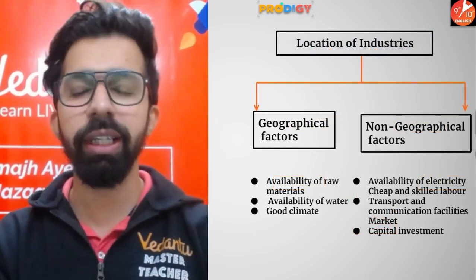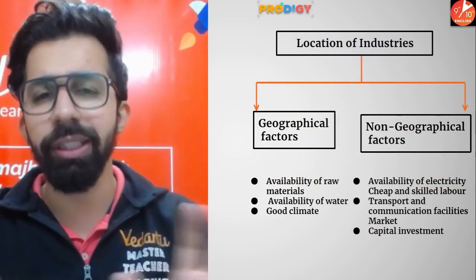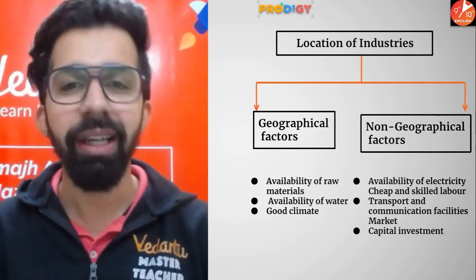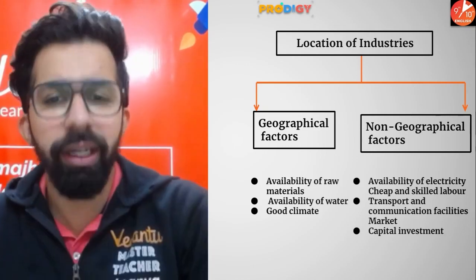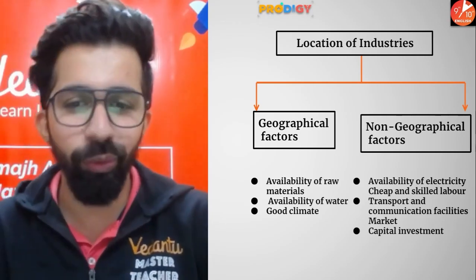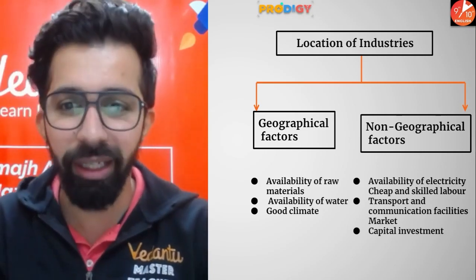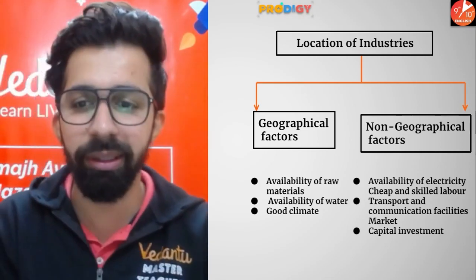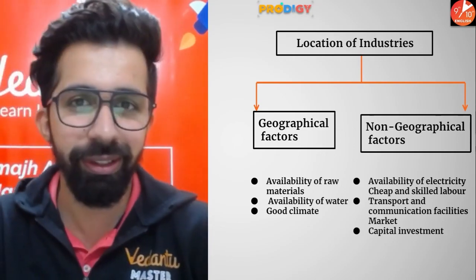We can classify these factors into two groups: geographical factors and non-geographical factors. Geographical factors include natural factors such as availability of raw materials, availability of water, and good climate. Non-geographical factors include electricity availability, cheap and skilled labor, unskilled labor, efficient transport and communication systems, and market access.